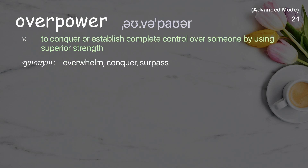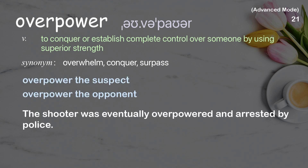Overpower: To conquer or establish complete control over someone by using superior strength. Examples: Overpower the suspect, Overpower the opponent. The shooter was eventually overpowered and arrested by police.